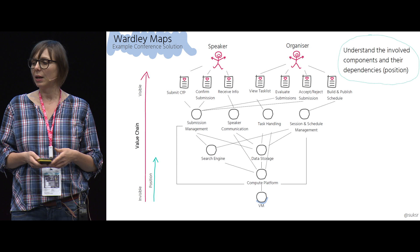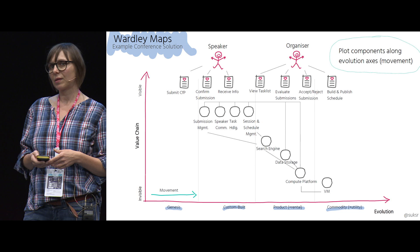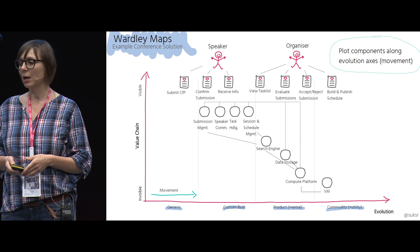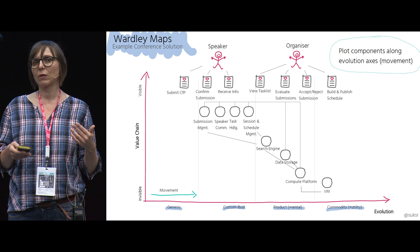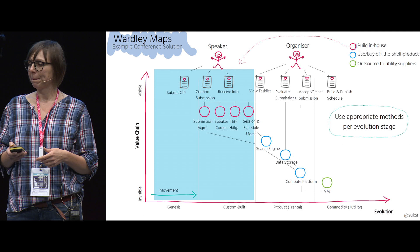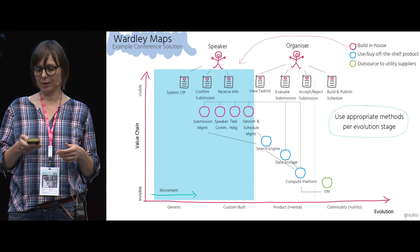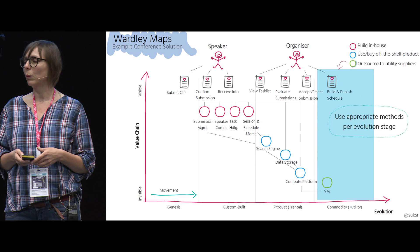Now we plot these components along the evolution axis. We are planning to custom-build our services, so they go into the Custom-Built evolution stage. We plan to use open-source software for the search engine and data storage, so they go into Product and Rental — each packaged as a container as the compute platform — running on top of a cloud-hosted virtual machine, which goes to Commodity and Utility. This allows us to identify which components to build in-house, which can use off-the-shelf or open-source solutions, and what to outsource to utility suppliers.